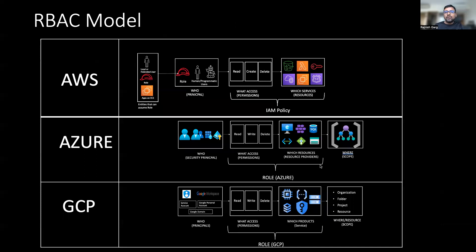This is one of the most interesting slides — you should take a screenshot and keep it for future reference. Here you see the differences between AWS, Azure, and GCP. On the identity side, AWS calls it a principal. In Azure, they call it a security principal, and in GCP, they call it principals.